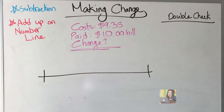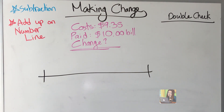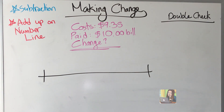Welcome back to our last video about money. In this video we're learning how to make change. Sometimes when we pay in cash in a store we give too much, so it's easier to pay with bills. The cashier has to give you some money back because you paid too much. It's a really important life skill to learn, so make sure you can double-check in your head that you've got the correct change back.